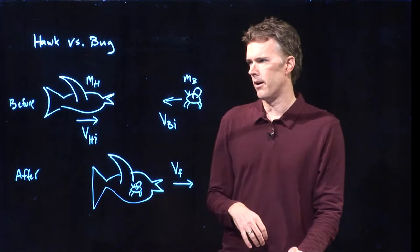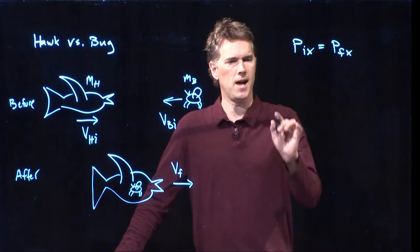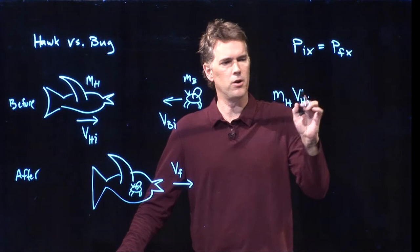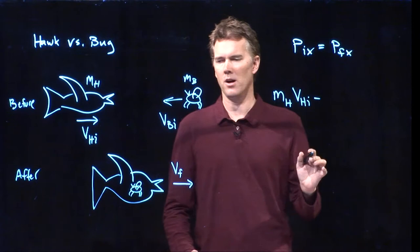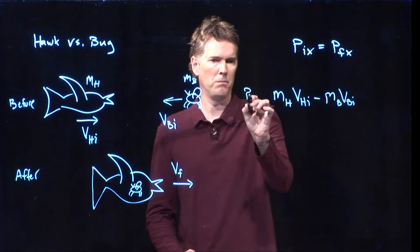All one dimension, so we're only worried about x. So what do we have initially? Initially, we have the mass of the hawk times the speed of the hawk going to the right. We have the mass of the bug times the speed of the bug going to the left. That is our p_initial.